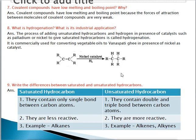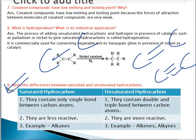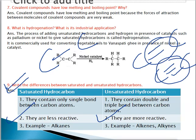Next: write the differences between saturated and unsaturated hydrocarbons. This is also one of the most important questions from this chapter. Make two columns — one for saturated and one for unsaturated hydrocarbons. Saturated hydrocarbons are those compounds which contain single bonds, whereas unsaturated compounds are those which contain double or triple bonds. Saturated hydrocarbons are less reactive, but unsaturated hydrocarbons are more reactive. Examples of saturated hydrocarbons are alkanes, and examples of unsaturated hydrocarbons are alkenes and alkynes.